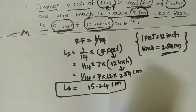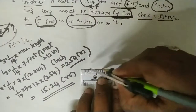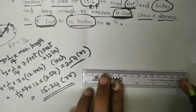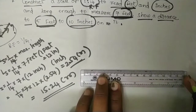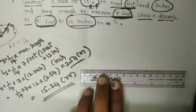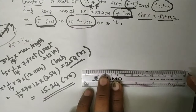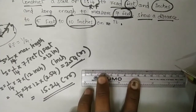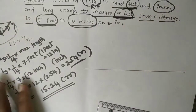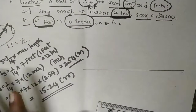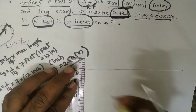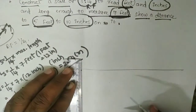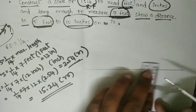Finally, the answer is 15.24 centimeters. The length of the scale on the drawing sheet equals 15.24 centimeters. Draw one horizontal line of dimension 15.24 centimeters, then draw one vertical line of size 10 mm.